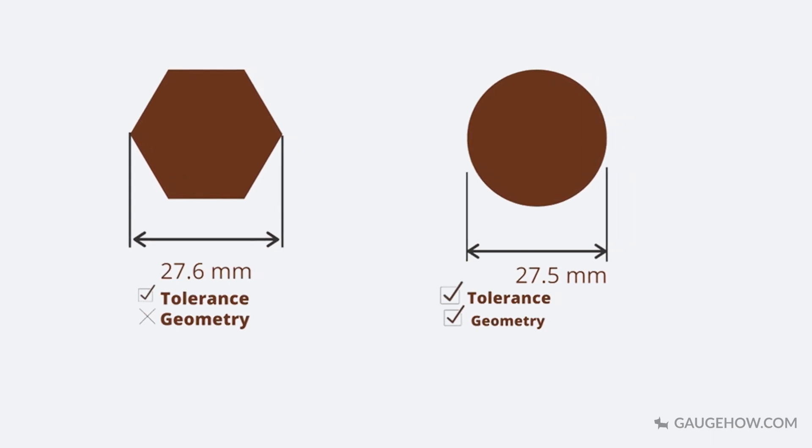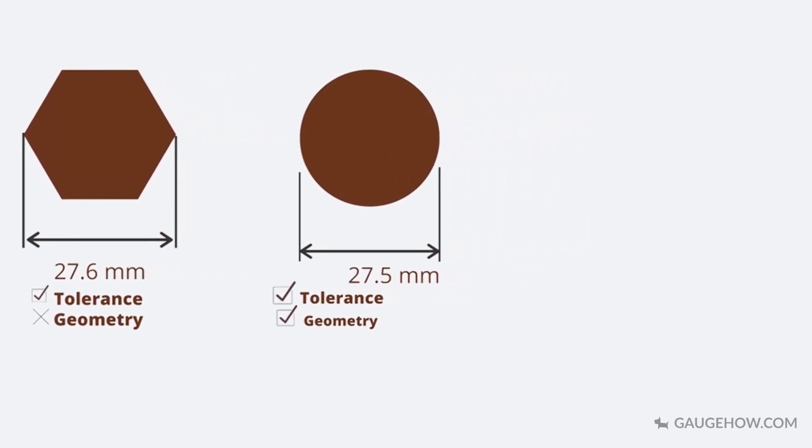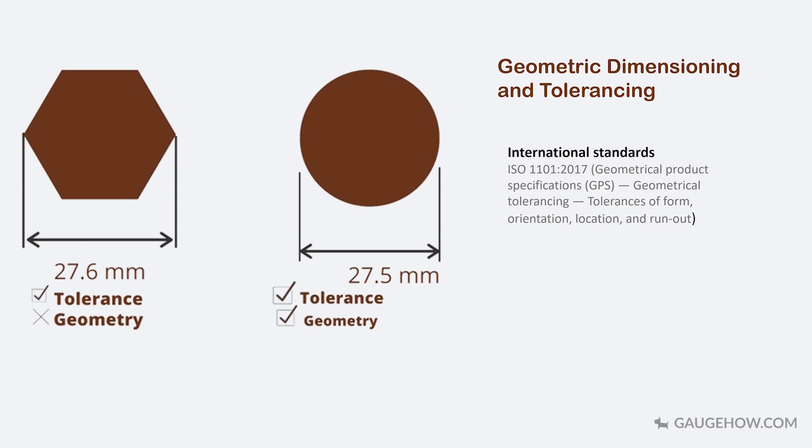This use of dimensional and geometrical tolerance in combination is known as geometric dimensioning and tolerancing. There are many standards of geometric dimension and tolerancing like international and national. However, the most common is ISO or International Organization for Standardization.